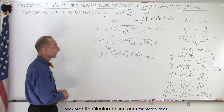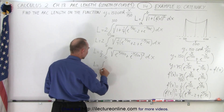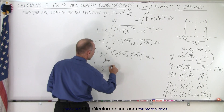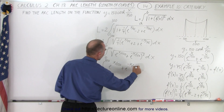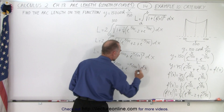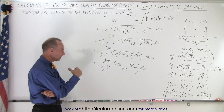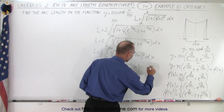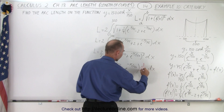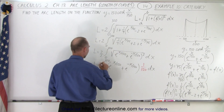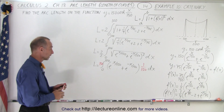Writing it as a binomial squared cancels the radical. The one quarter comes out as one half, which cancels the factor of 2, giving L equals the integral from 0 to 100 of the quantity e to the x over 150 plus e to the minus x over 150, times dx. We need a factor of 1 over 150 to integrate, so we multiply by 150 as well.